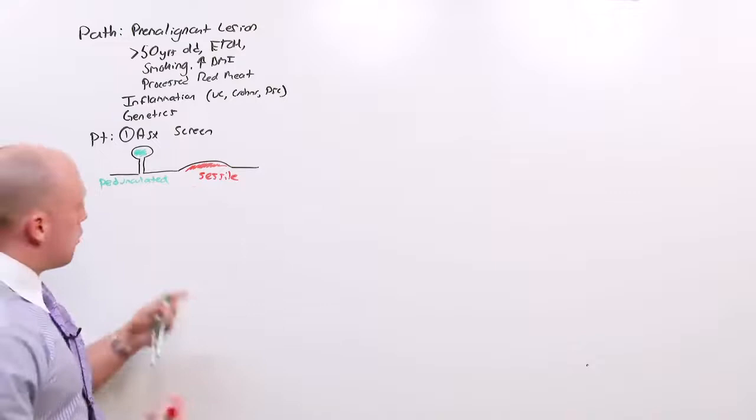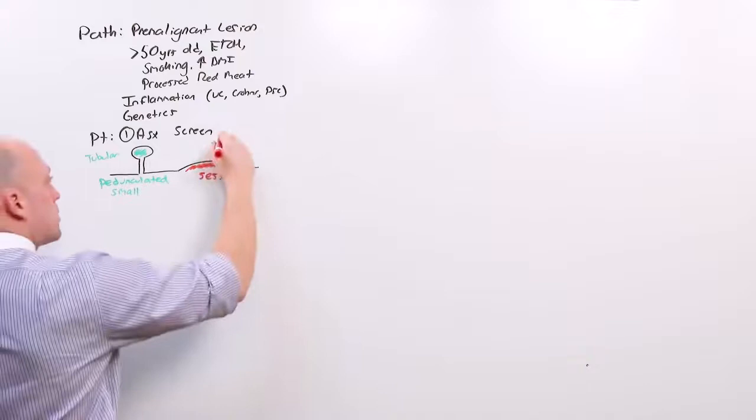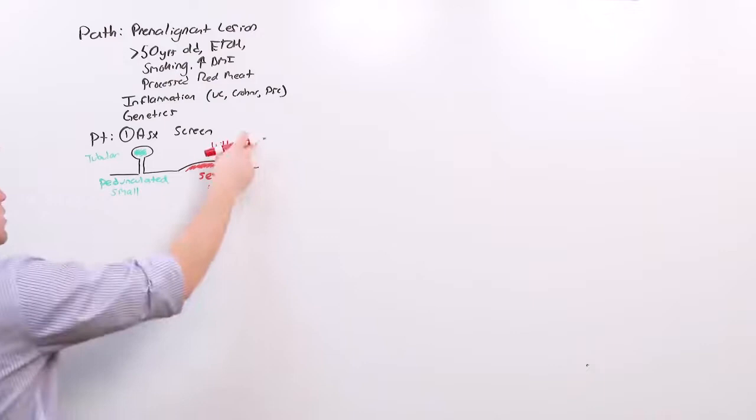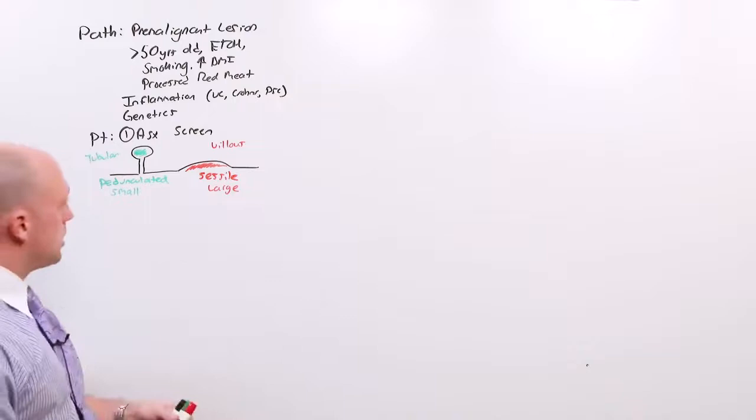Other things that make a polyp good are going to be tubular histology and small. Other things that make polyps bad are going to be villous and large. Large sessile lesions that have villous histology or low-grade dysplasia are bad. The ones that are pedunculated, small and tubular adenomas, good. This is the way you want people to present, that is with the asymptomatic screen.